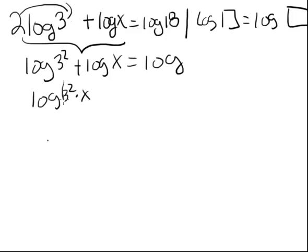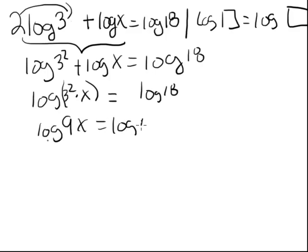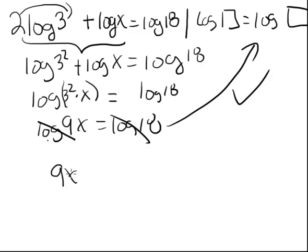That should be 18, equals log 18. And 3 squared is 9, so we can write log of 9x equals log of 18. And we now are in what we wanted. We can now get rid of these and we know that 9x equals 18, and x equals 2.